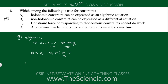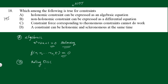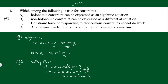Now checking option B: non-holonomic constraint can be expressed as a differential equation. I gave you an example of a rolling disk from Classical Mechanics by J.C. Upadhyaya. In that problem, the constraints are dx − A sinθ dφ = 0 and dy + A cosθ dφ = 0. These are differential equations, so non-holonomic constraints can be expressed as differential equations. Option B is also correct.